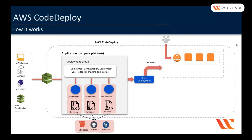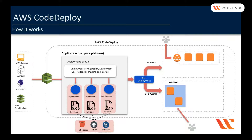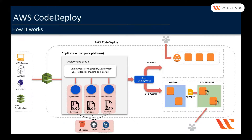Now let's talk about blue-green deployment. We have our original environment where customers are currently accessing. When CodeDeploy starts the deployment, unlike in-place deployment, it does not interrupt the existing environment, which we call as blue. CodeDeploy starts provisioning a similar environment based on the configuration we provide — usually an auto scaling group — and deploys the latest version to this replacement environment, which we call as green. Once deployment is complete, CodeDeploy switches the traffic from the blue environment to the green environment. Once you are sure there are no issues, you can terminate the original environment. This way, customer traffic is never affected, and you can easily roll back to the original state if there is any issue.